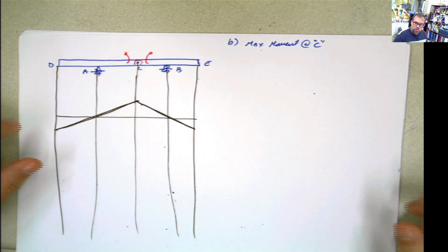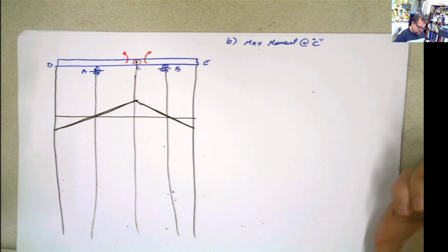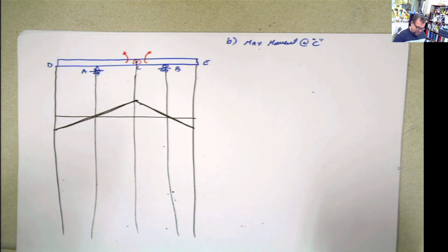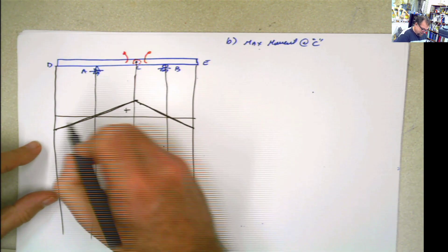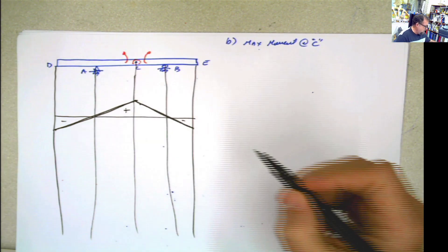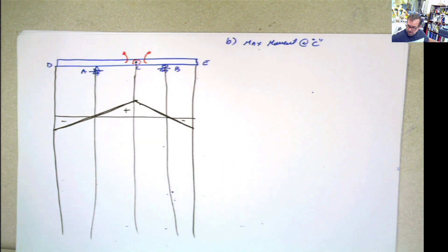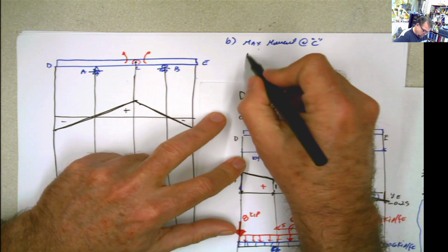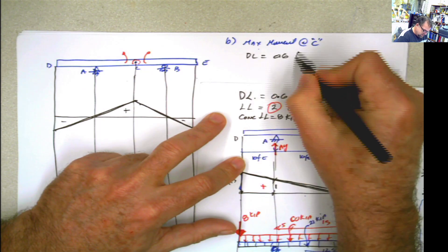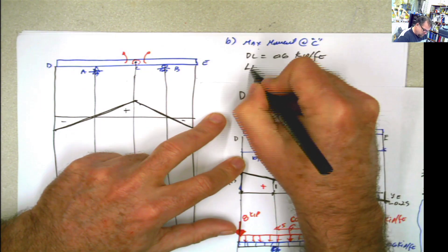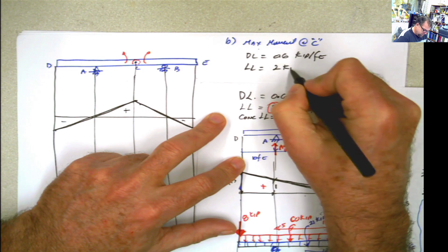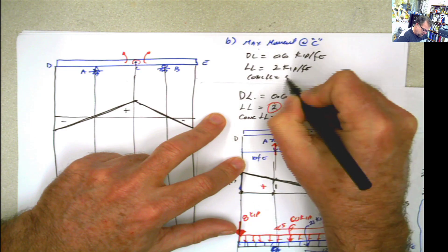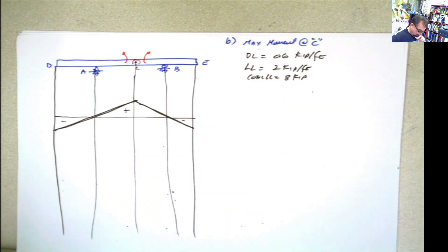Now we don't know what to do because I forgot how to calculate these values. Well, you can use the statics approach. You know this is positive and this is negative. Our loads are: dead load 0.6, live load 2, concentrated live load 8 — these are factored loads.